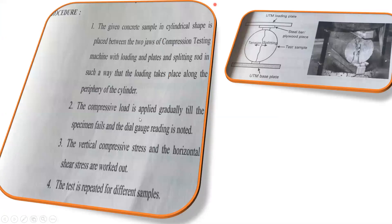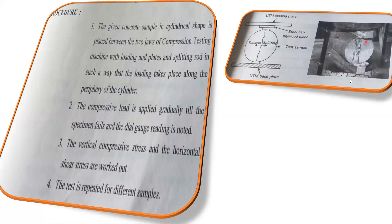The procedure is straightforward. The given concrete sample, which is cylindrical in shape, is placed between the two jaws of the compressive testing machine with the loading plates and splitting rod such that loading takes place along the periphery of the cylinder. The compressive load is applied gradually till the specimen fails and the dial gauge reading is noted. The vertical compressive stress and horizontal shear stresses are worked out. The test is repeated for different samples — usually three samples — and the crack formed confirms failure.